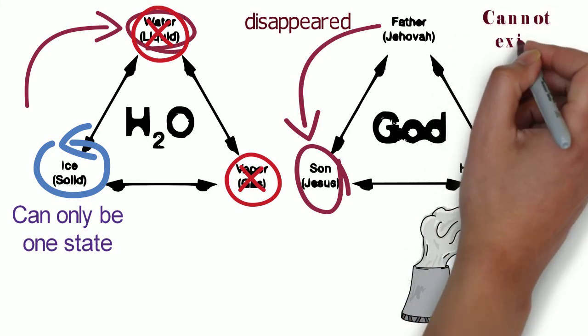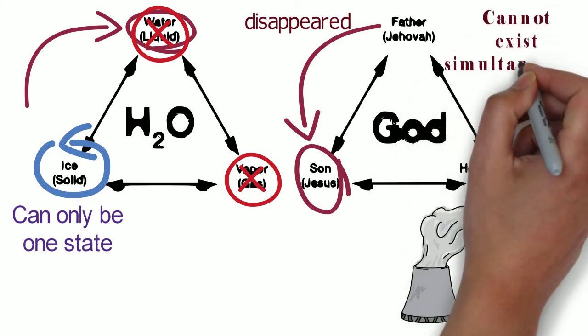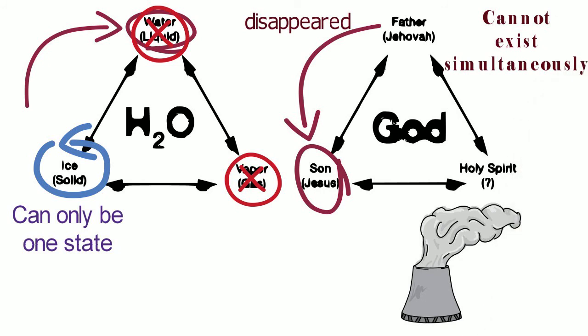So they believe this existed simultaneously. That is the fallacy about the paradox in their belief.